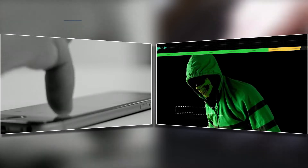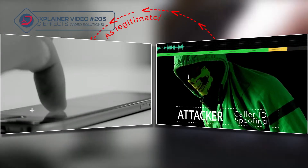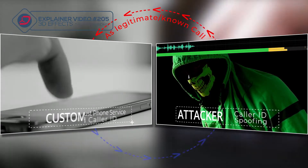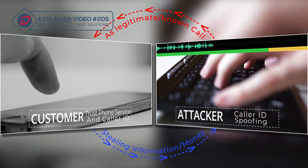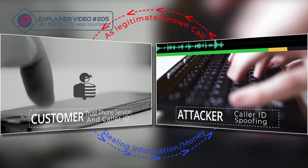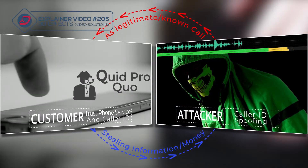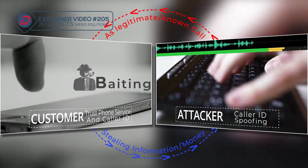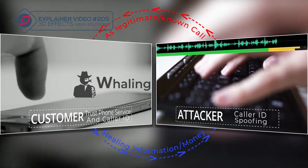Social engineering uses a variety of innovative tactics to manipulate human motivations and emotions, including phishing, quid pro quo, baiting, pretexting, and whaling.